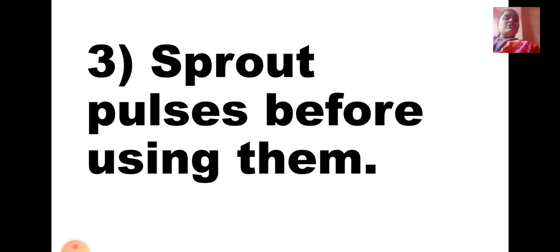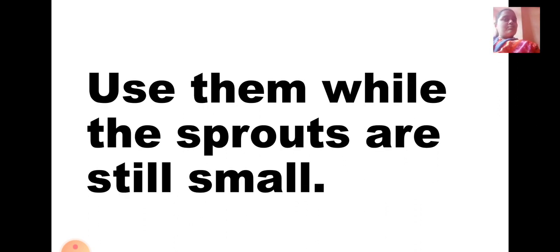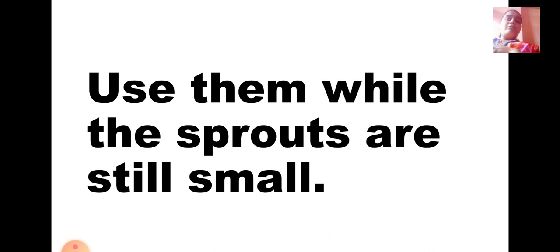Third tip: sprout pulses before using them. Pulses like moong and matki should be soaked in water overnight, then you can sprout them. Keep them for a day or two and sprouts will develop, which are very healthy and give you a maximum amount of nutrients. Use them while the sprouts are still small — don't wait for them to grow long. Keep the sprouts small; that is enough and healthy.